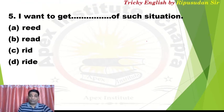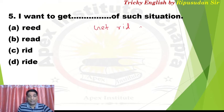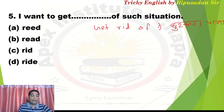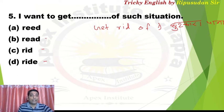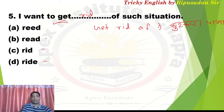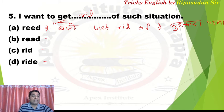'Get rid of' means to get rid of or escape from something. This has been asked many times. If 'get' is given and we have to fill the blank, write 'rid'. Sometimes 'read off' is given and we have to fill the verb — put 'get' there. When a noun needs to be filled, use 'rid'. Note: 'r-e-d' — this 'read' means the wick of a lamp or candle — that wick in English is called 'read'.